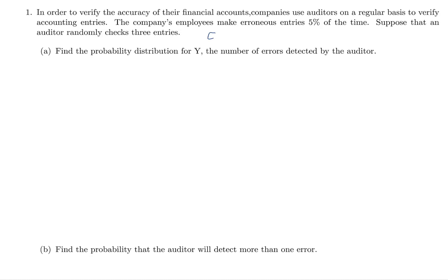Three entries: entry 1, entry 2, and entry 3. What are the possibilities? Let me use E for an error on a single entry and N for no error.